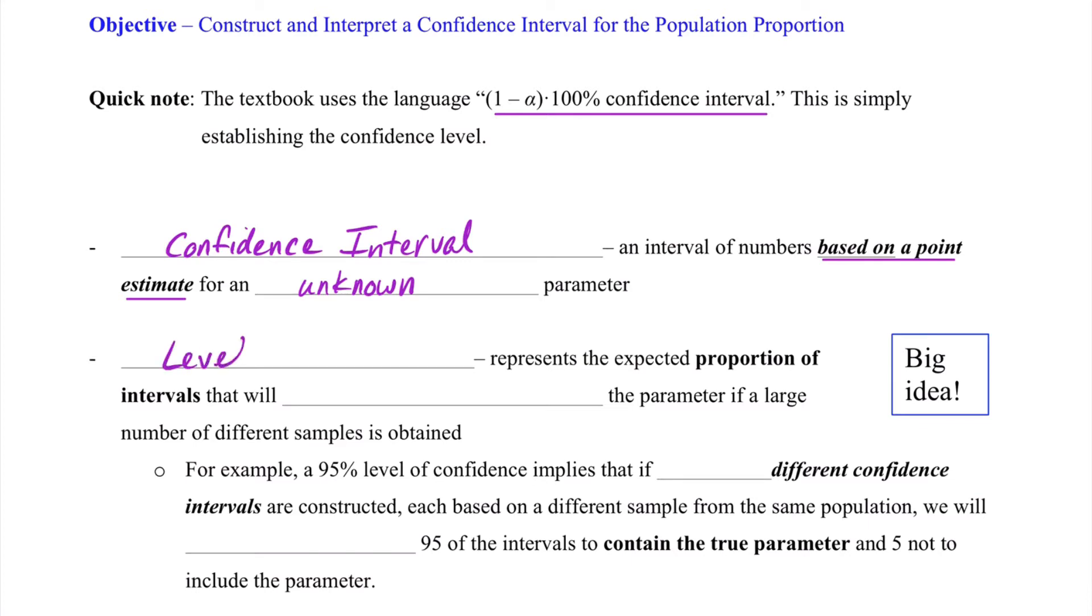Now, the level of confidence represents the expected proportion of intervals that will contain the parameter if a large number of different samples is obtained. This sometimes gets a bit confusing. So just to elaborate, for example, a 95% level of confidence implies that if 100 different confidence intervals are constructed, each based on a different sample from the same population, we will expect 95 of the intervals to contain the true parameter.